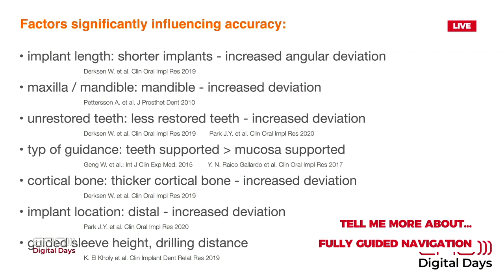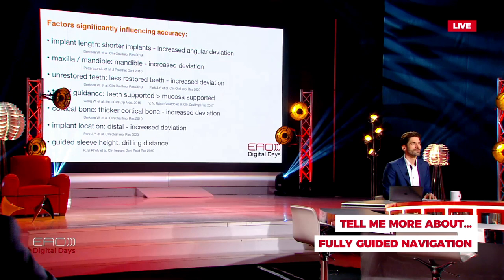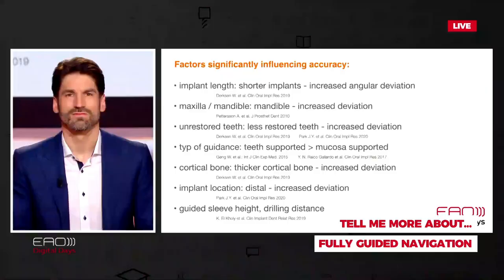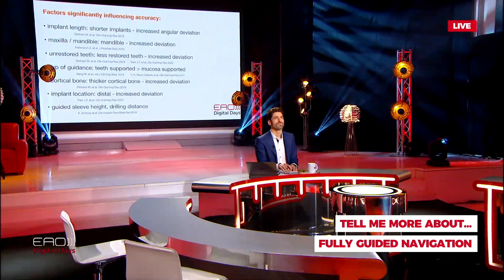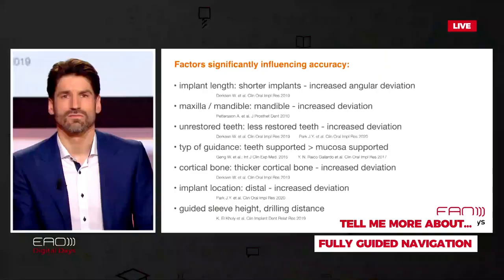The implant location: the more distally you want to place implants with guided static guidance, the more increased the deviations. This is due to the fact that you cannot handle with accuracy in the posterior, especially in the posterior mandible. It might be possible to place implants fully guided in the maxilla, but please don't try it in the mandible when the opposing dentition is still in the mouth — you will most probably end up in some troubles. And the last one is the guided sleeve height and the drilling distance. The closer you are to the bone where you want to place your implants, the more accurate the placement.